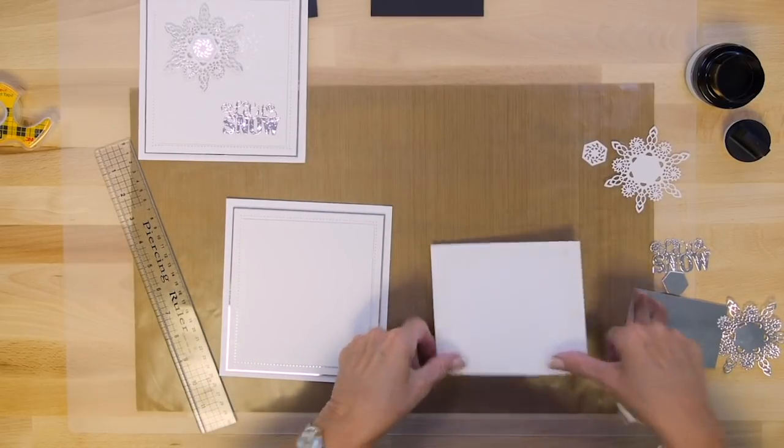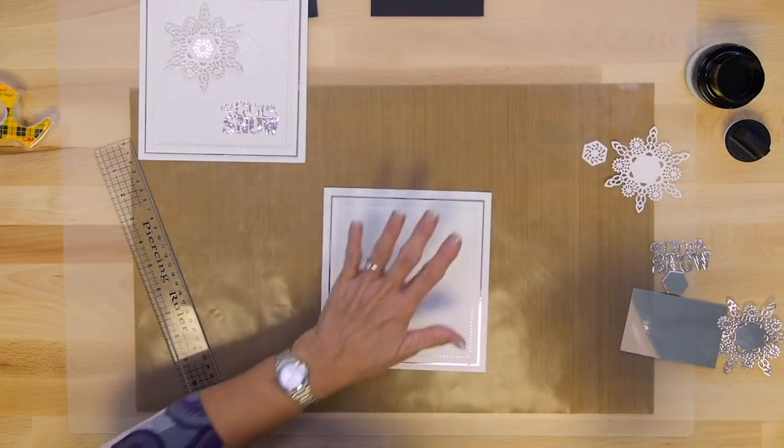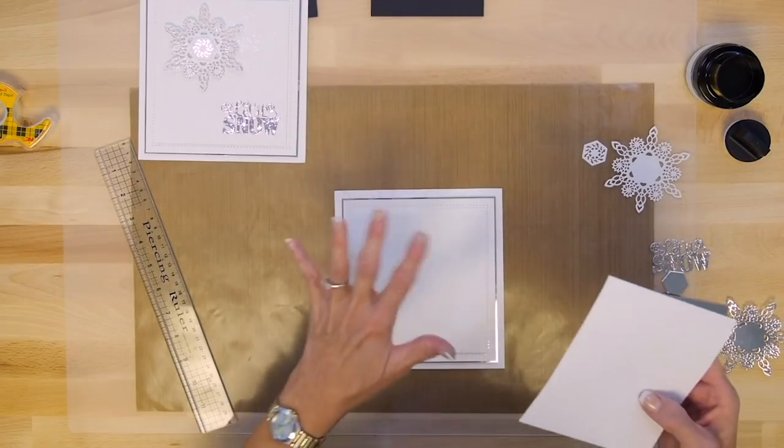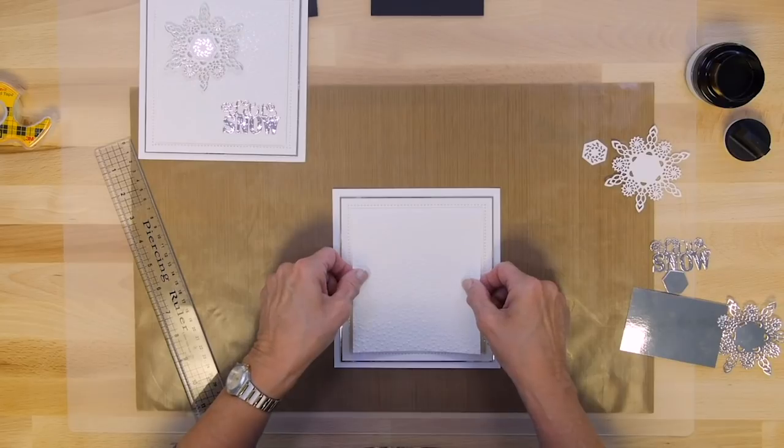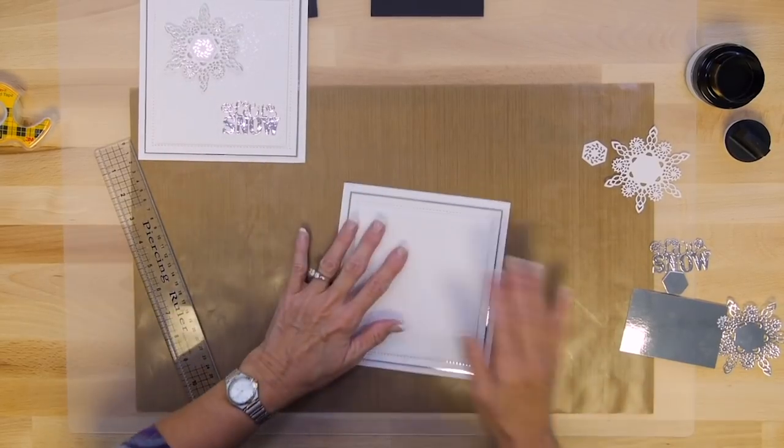And I've gone ahead and done some piercing and matting and layering here for my background. I've brought in some silver mirror card because we're going to be using that as well. And that's perfect. Leave that for the moment.